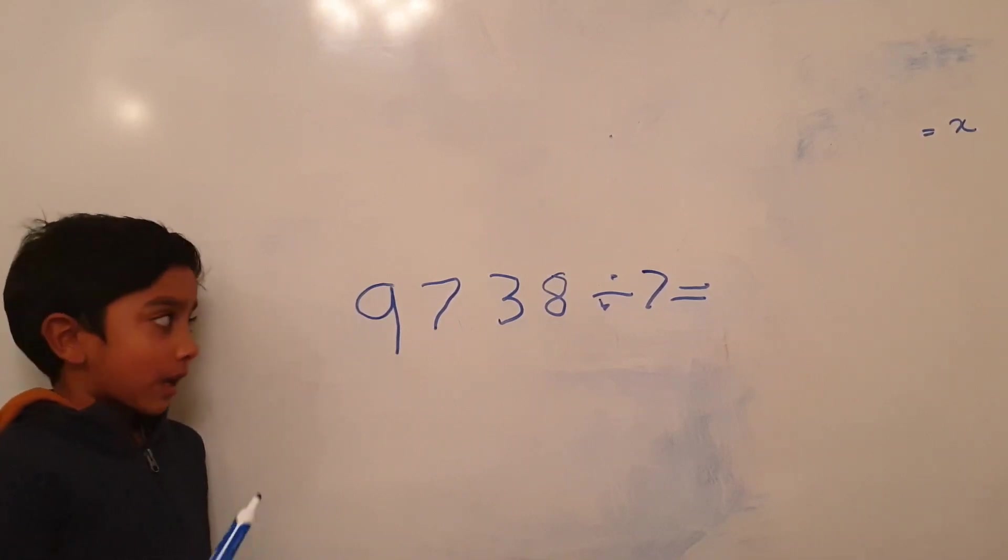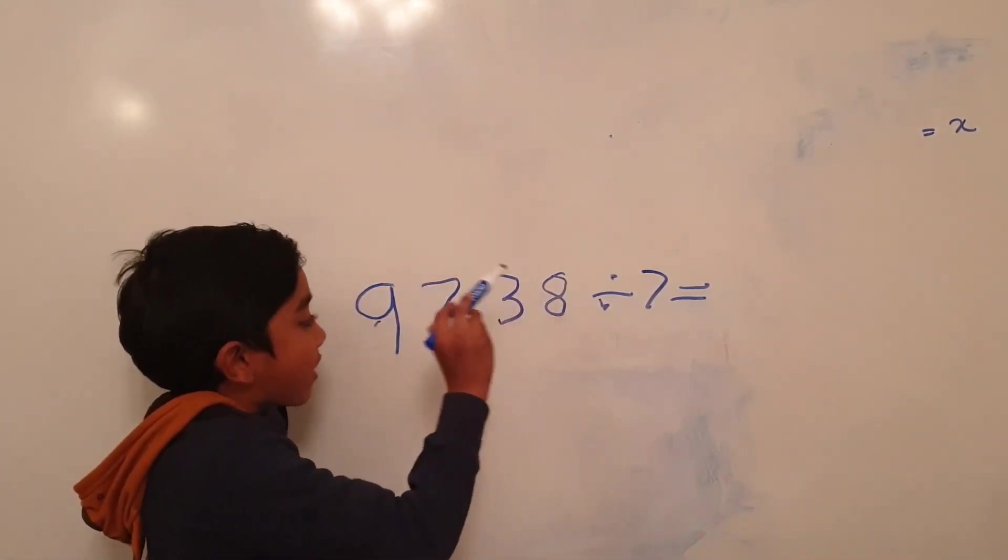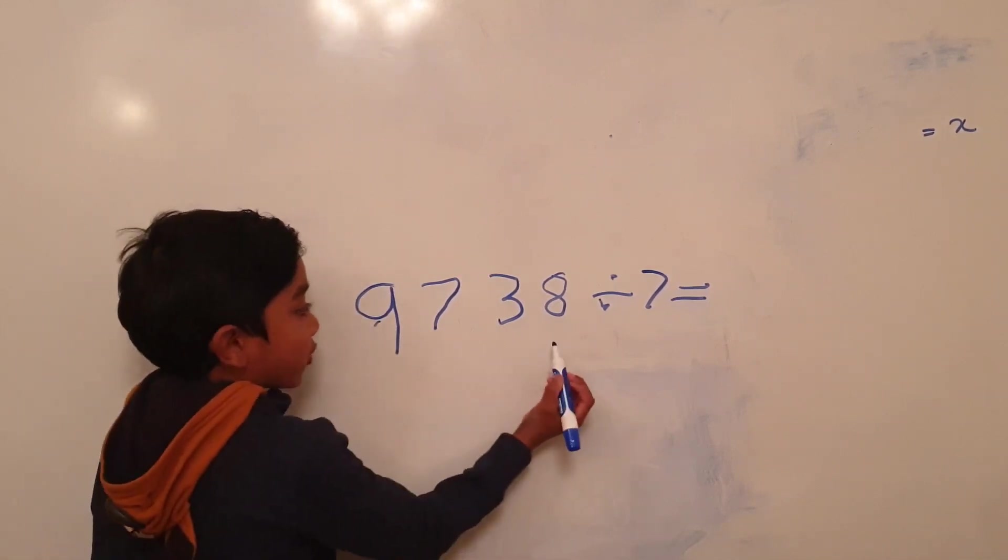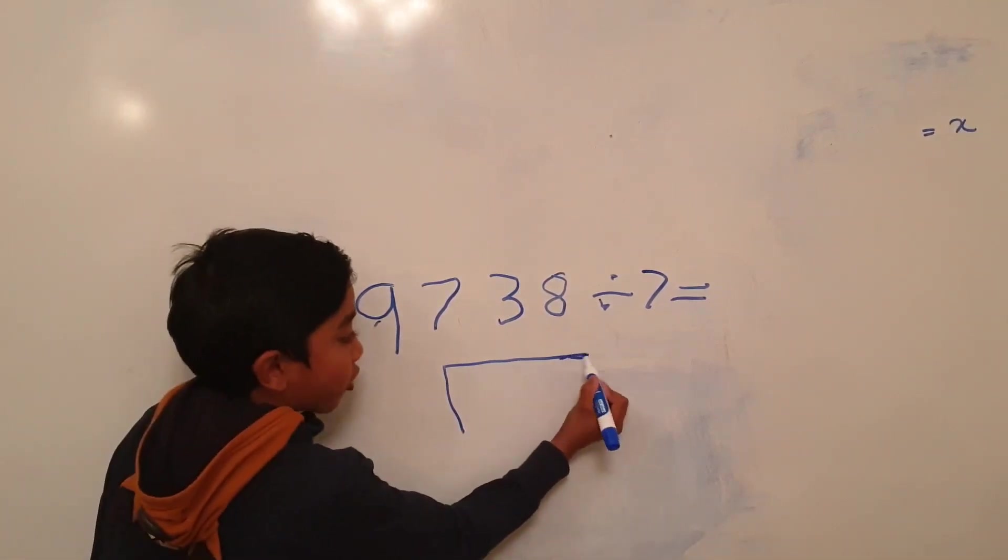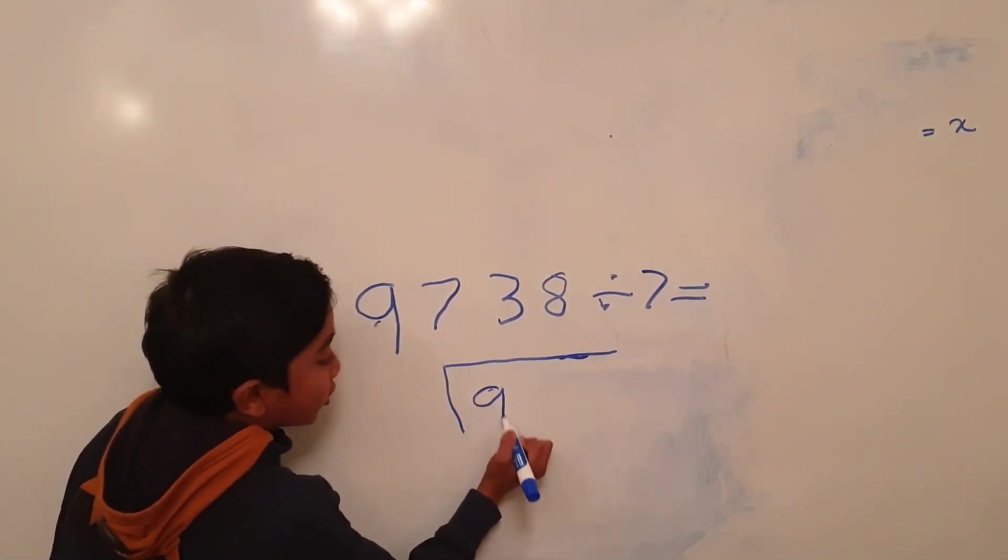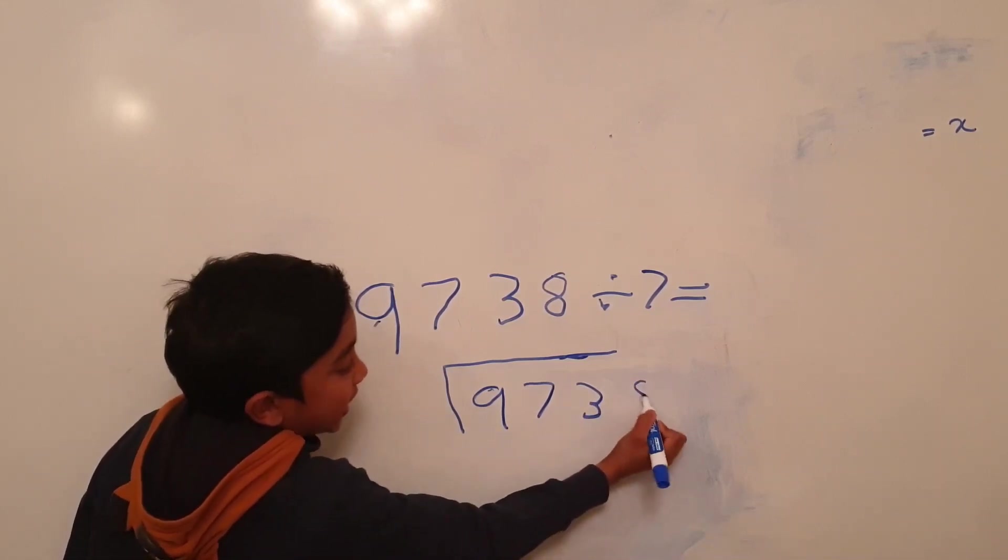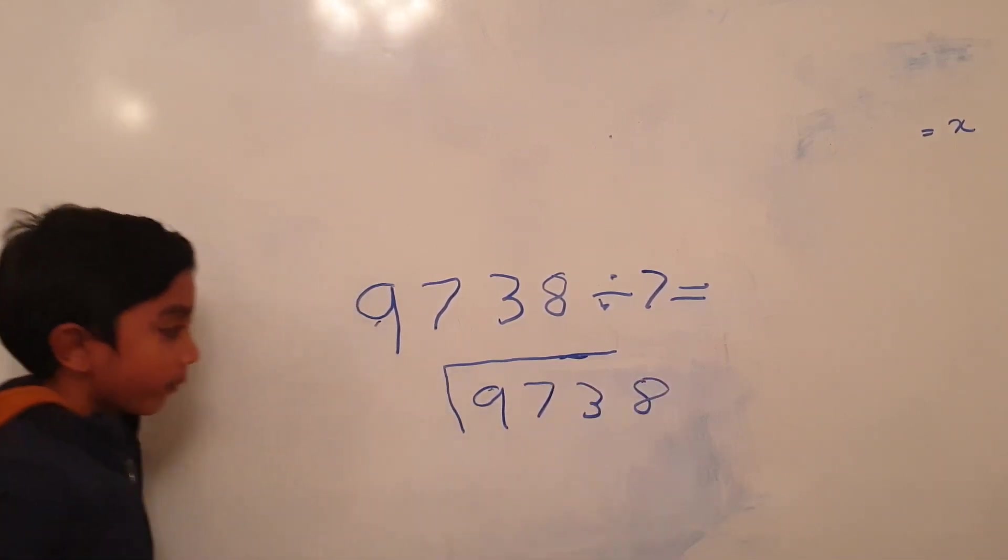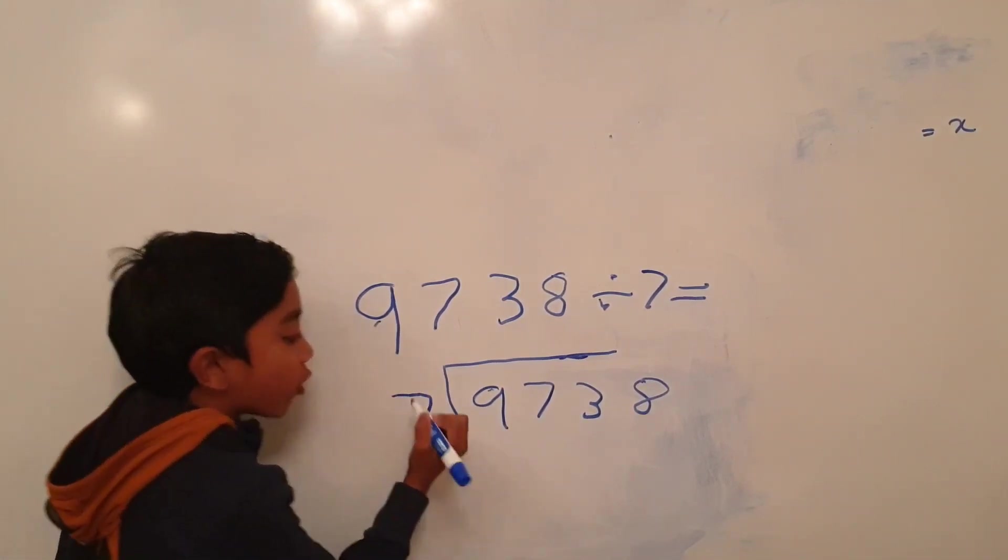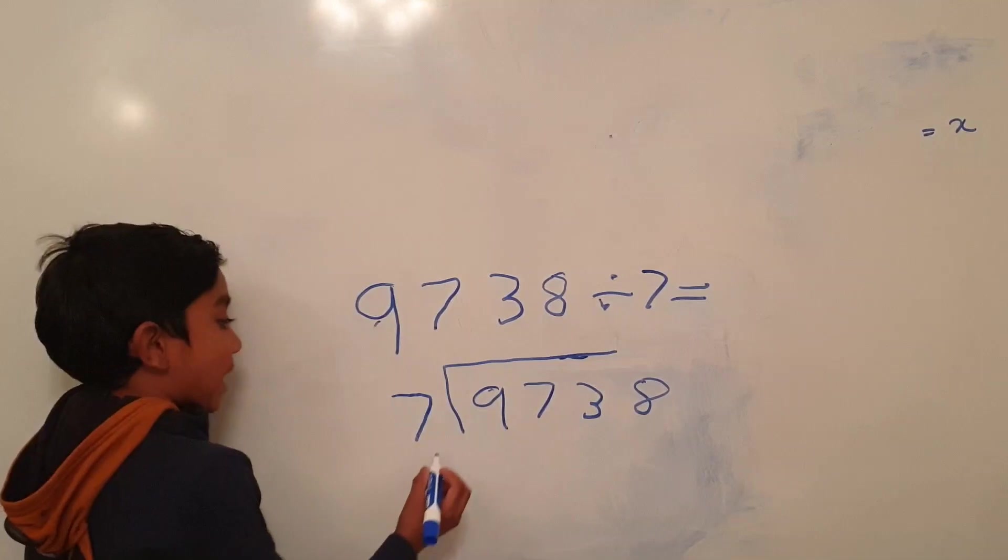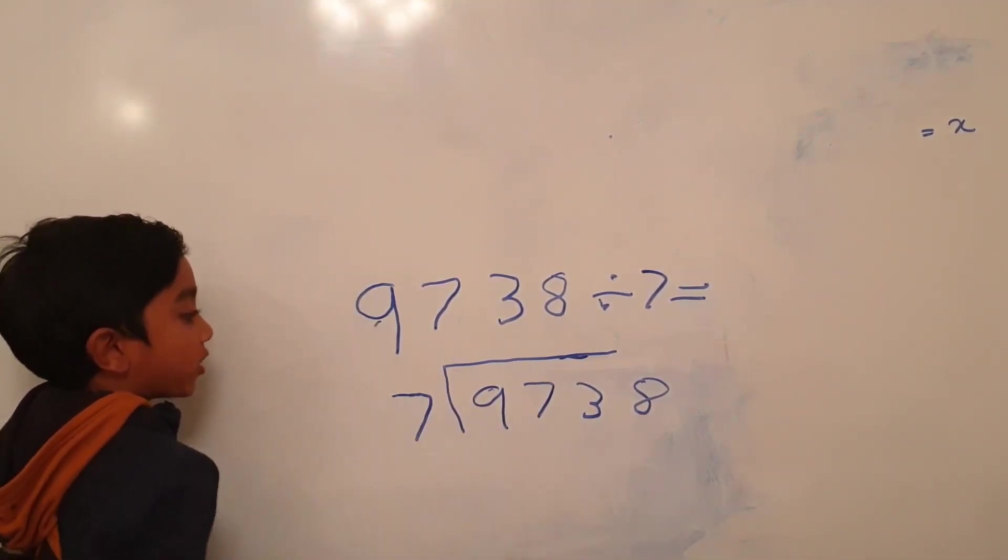Example number 3. 9,738 divided by 7. We put our bus stop here. After you've done your bus stop, place 9,738 in your bus stop. And then place 7 outside your bus stop.